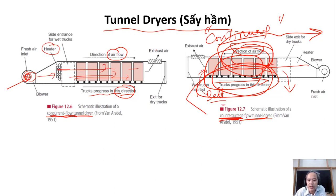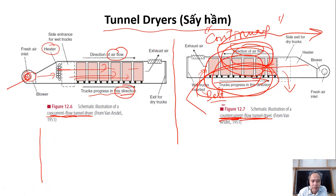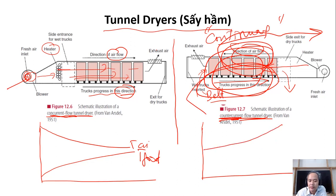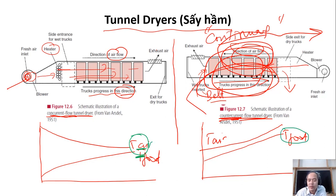Basically we have co-current and counter-current. The main differences are in terms of advantages and disadvantages. If you look at the temperature profile along the length of the system, this shows the temperature of the air and the temperature of the food. In counter-current, the temperature of the food at the output can be higher than the output temperature of the air.